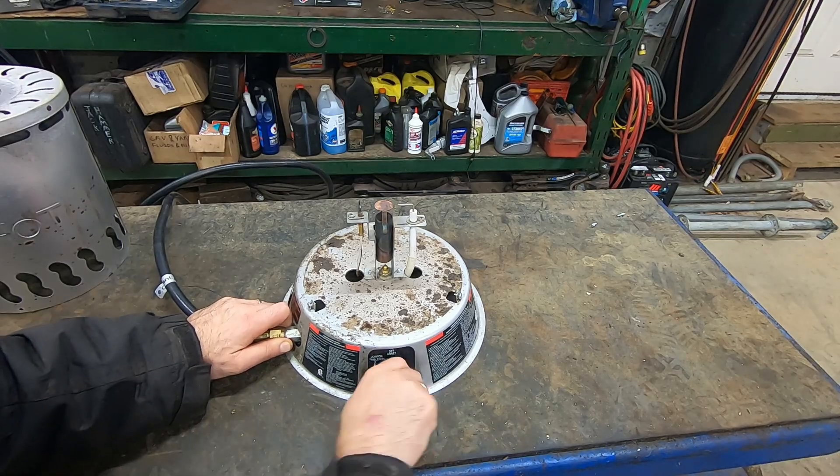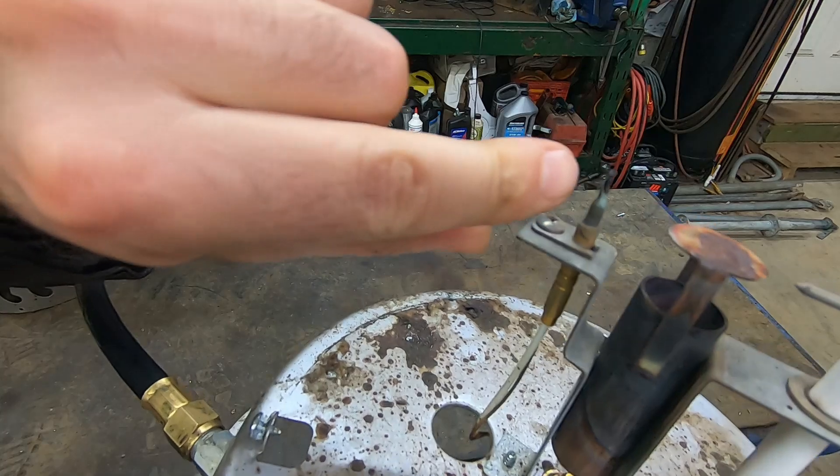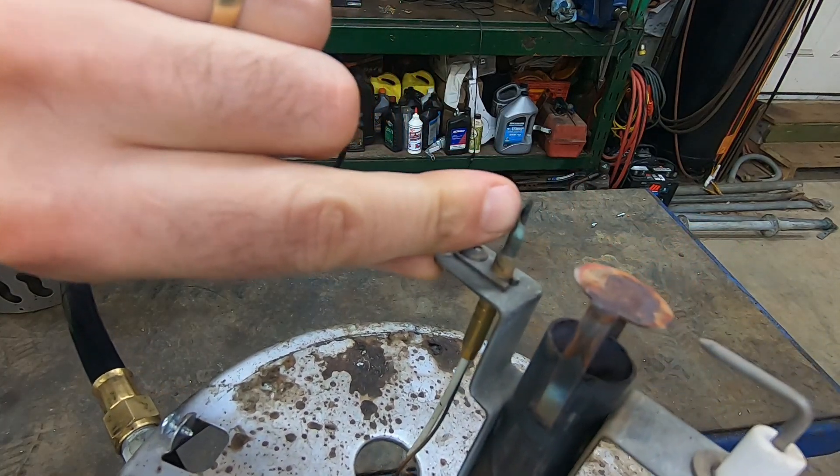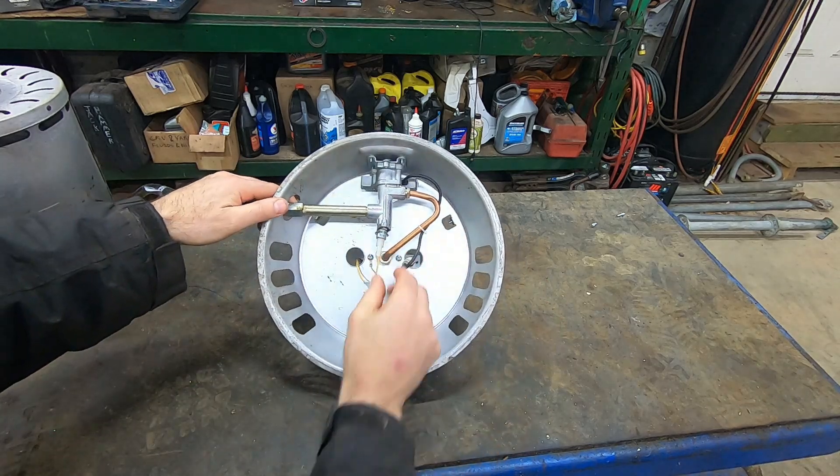Now this is the thermocouple. It is damaged. There's a broken tip on it and basically it's not doing its job. Now if I show you what's underneath here, that thermocouple has two wires.